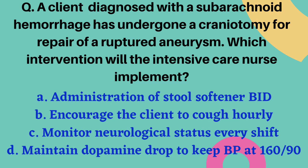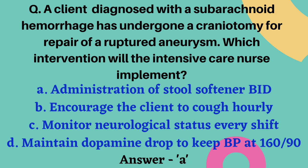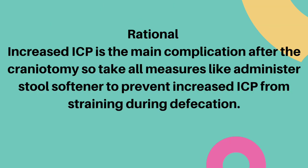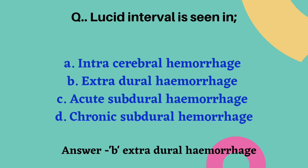A client diagnosed with subarachnoid hemorrhage has undergone craniotomy for repair of a ruptured aneurysm — which intervention will the ICU nurse implement? Options are administration of stool softener twice daily, encourage coughing hourly, monitor neurological status every shift, or maintain dopamine drip to keep BP at 160/90. The correct answer is option A — administer stool softener. Increased ICP is the main complication after craniotomy, so stool softener is given to prevent straining and increased ICP.